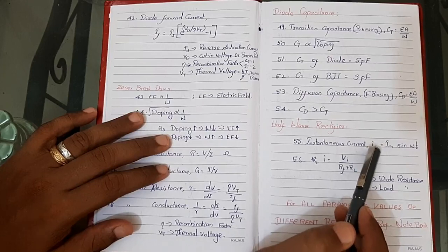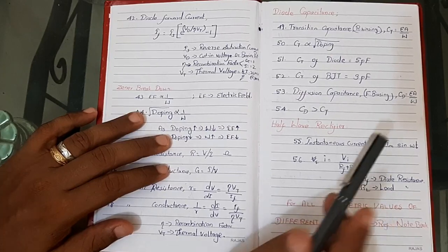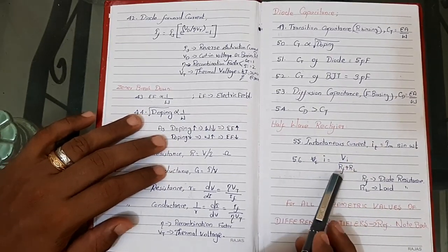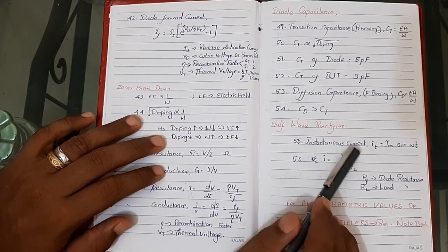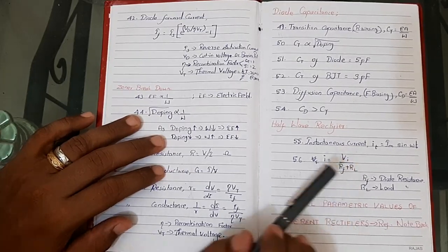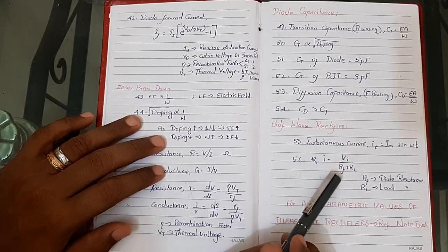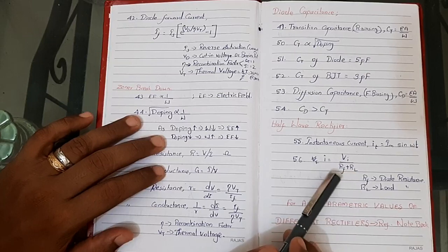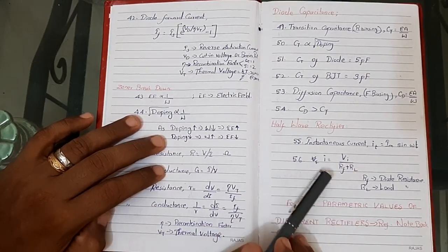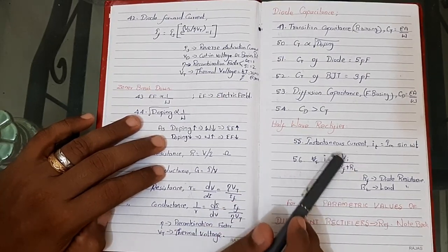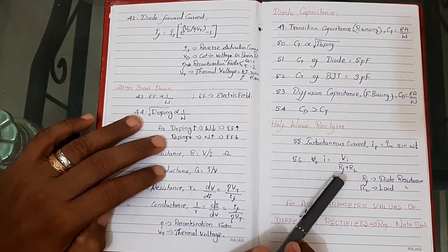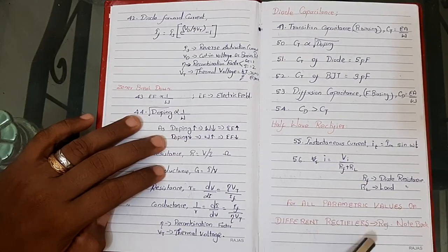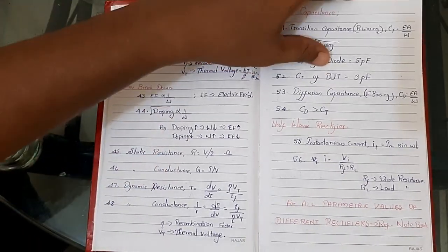Number 56: I = VA divided by (RF + RL). This is essentially Ohm's law, but both the diode resistance RF and load resistance RL are considered. This is for the half-wave rectifier — the current equals voltage divided by the sum of RF and RL.